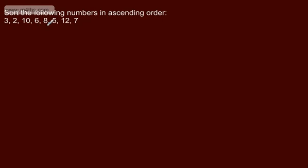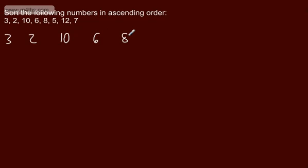We're asked to sort the following numbers in ascending order using a bubble sort. Ascending means going from smallest to largest; descending the other way. I'm going to write this out in the order given: 3, 2, 10, 6, 8, 5, 12, and 7.